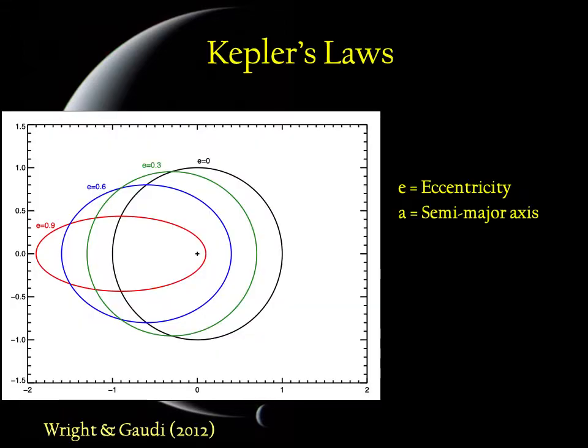So we start at the beginning with Kepler's laws. We expect that planets will orbit stars in ellipses with the star at one focus or more precisely with the center of mass of the system at one focus. These orbits are characterized by their physical size given by their semi-major axis, that is half the distance from the extreme points along the long axis of the ellipse, and their eccentricity which tells you how elliptical the orbits are.